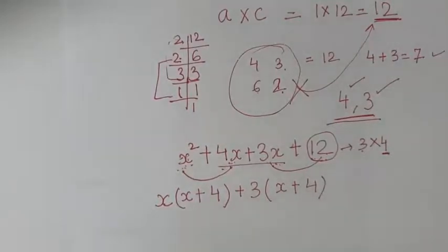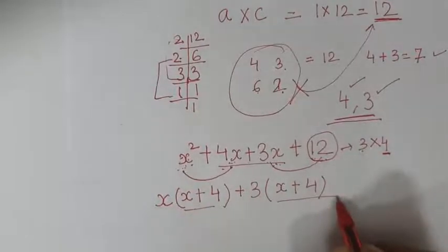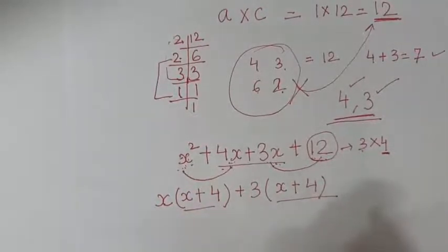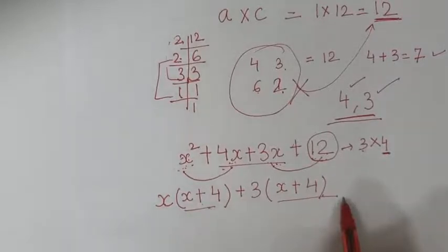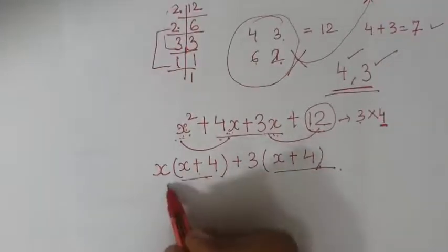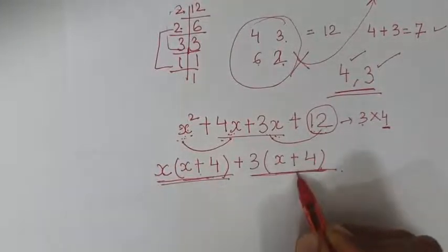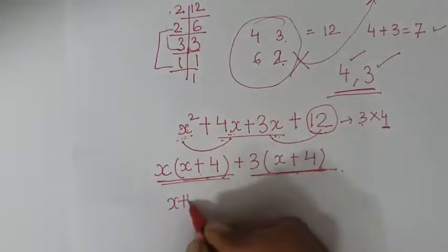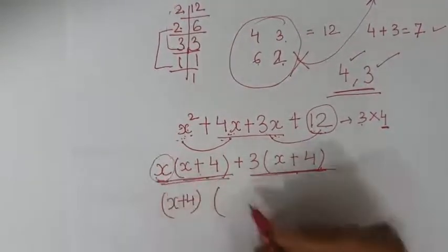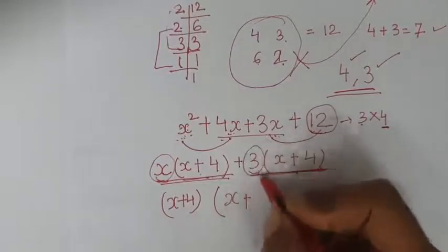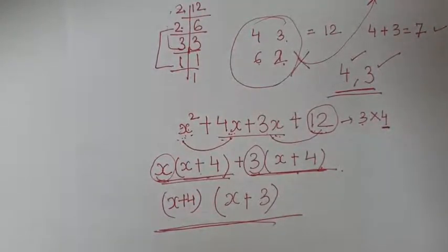One thing to keep in mind, children: these two brackets should always be the same. If they are the same, it means we are doing it correctly. Here we have (x + 4) and (x + 4) — they are the same. So take (x + 4) as common. What is left inside? x and 3. So the final factorization is (x + 4)(x + 3). Clear?